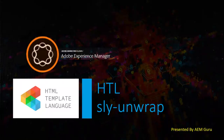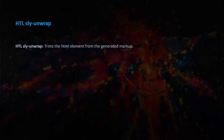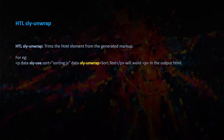htl:sly unwrap is part of HTL block statements. It trims the HTML element from the generated markup. An example is shown here — while executing the code block, it avoids the HTML element p in the output response.